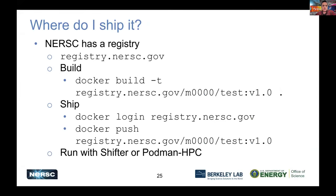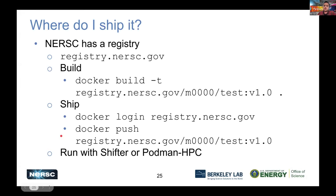To ship your container, NERSC provides a registry at registry.nersc.gov. Each project has its own section in the registry. You build locally with docker build, tag the image with your project's M-account name, then log in with docker login to the registry and push it up.